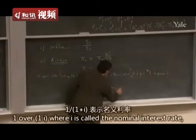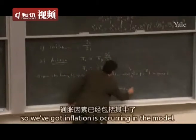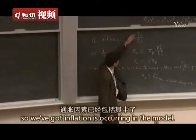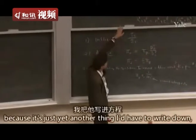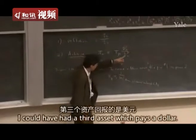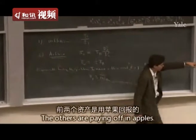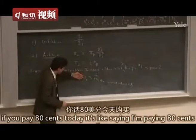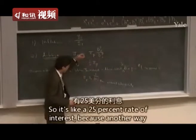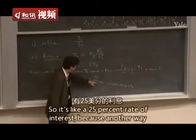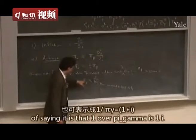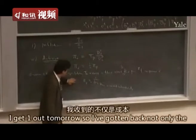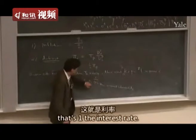If you pay $0.80 today and get a whole dollar tomorrow, that's like a 25% rate of interest. Another way of saying it: 1 over pi_gamma equals 1 plus i. You put in only pi_gamma today and get 1 out tomorrow — you've gotten back not only the pi_gamma you put in but something extra, which is 1 plus the interest rate. So this world is going to have an interest rate in it and inflation in it.